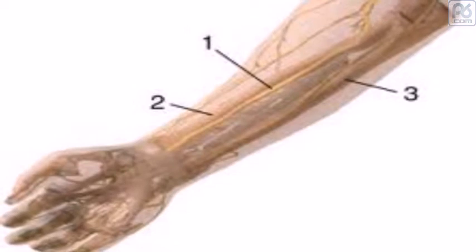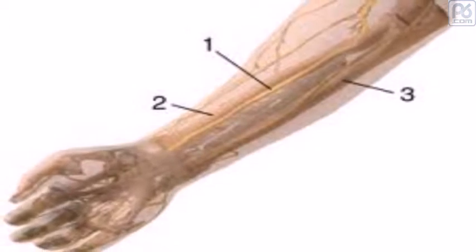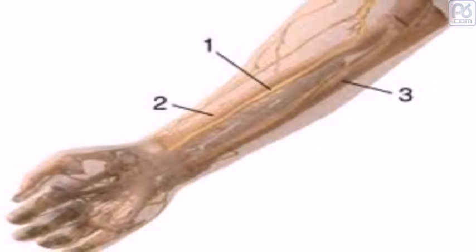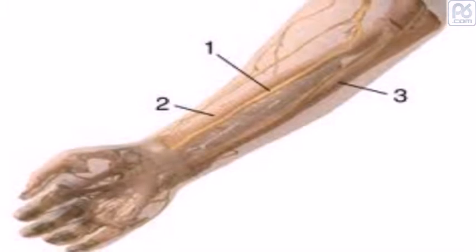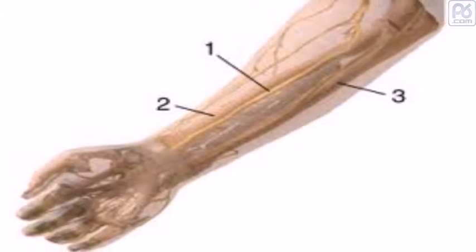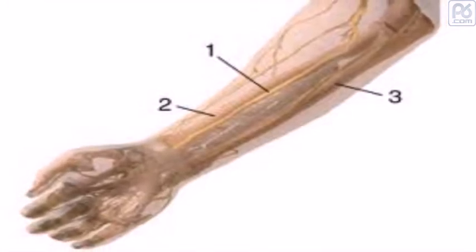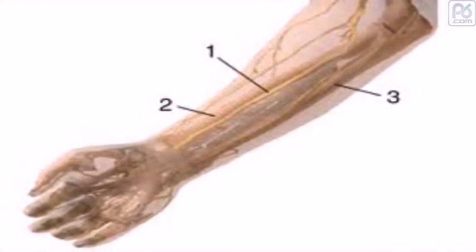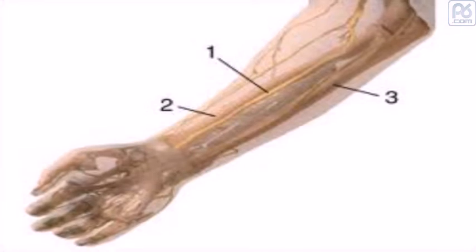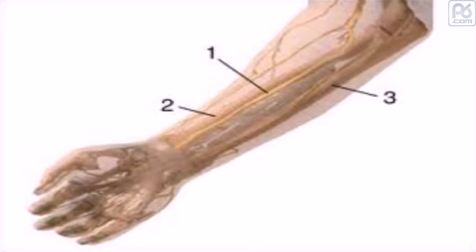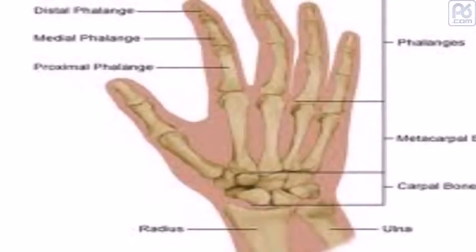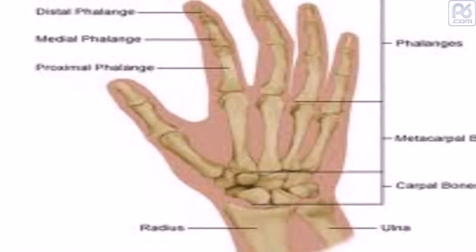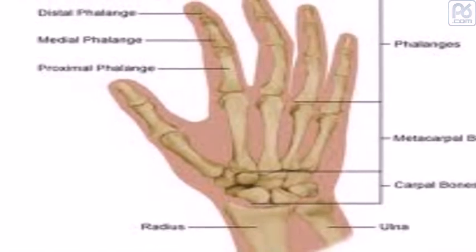While the ulna is the major contributor to the elbow joint, the radius primarily contributes to the wrist joint. The radius is named so because it acts like the radius of a circle. The ulna acts as the center point of the circle, because when the arm is rotated, the ulna does not move.